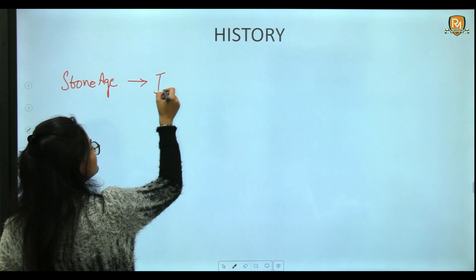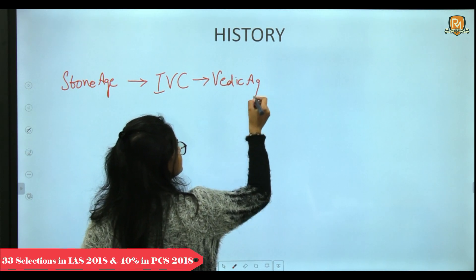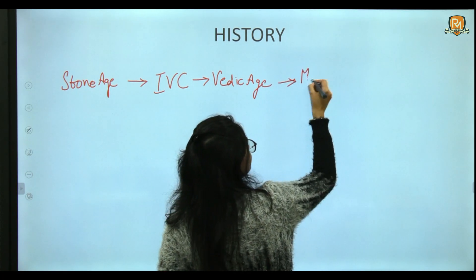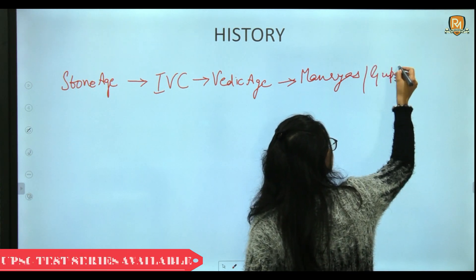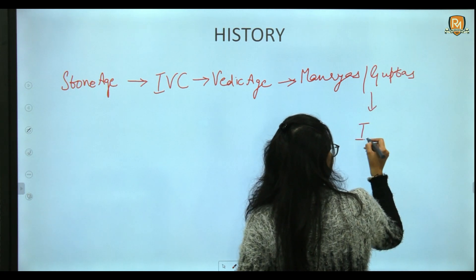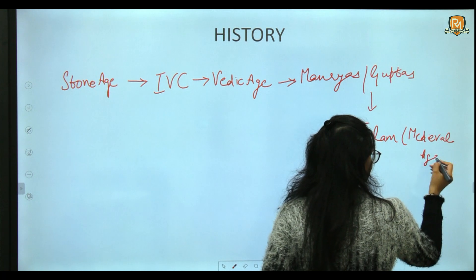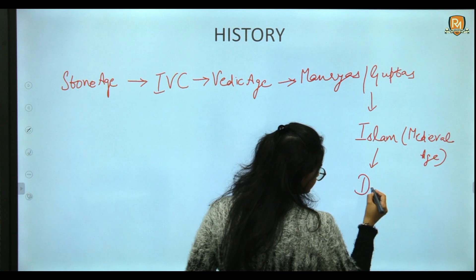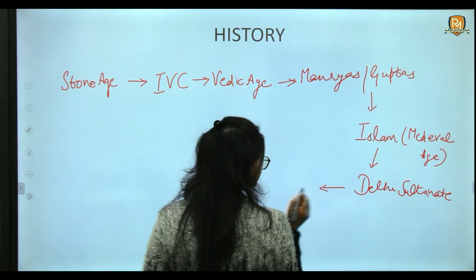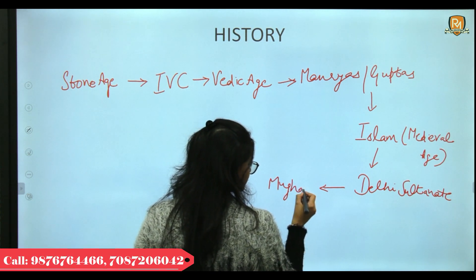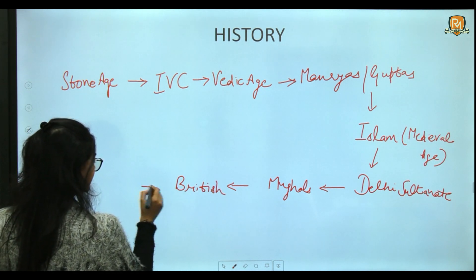After the Stone Age, we move to the Indus Valley Civilization, then the Vedic Age, followed by the Mauryas and Guptas. Then we will discuss the arrival of Islam in the Medieval Age, followed by the Delhi Sultanate, the Mughals, the British period, and finally independence and post-independence.